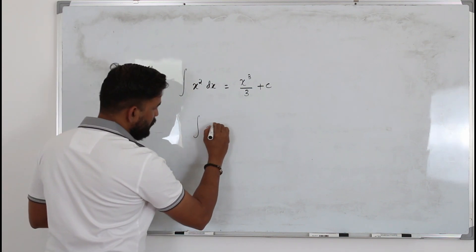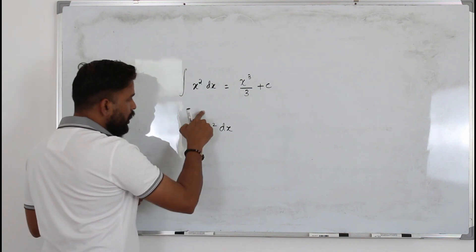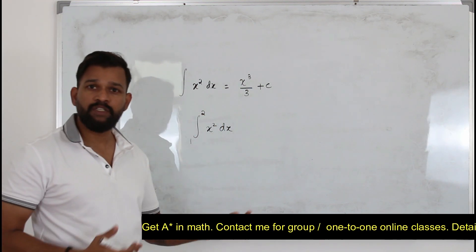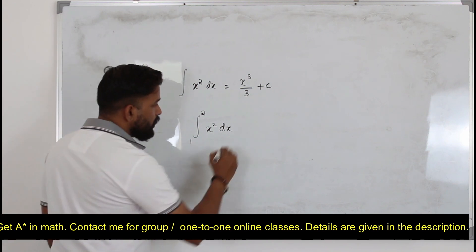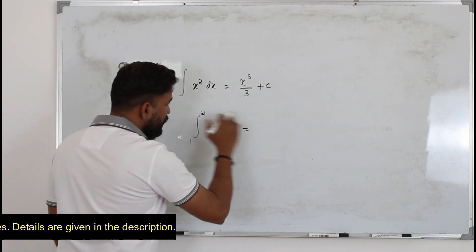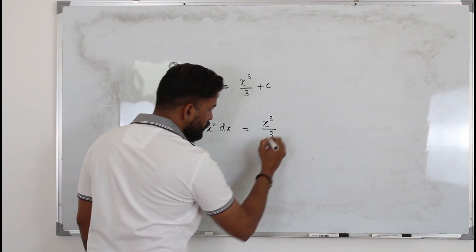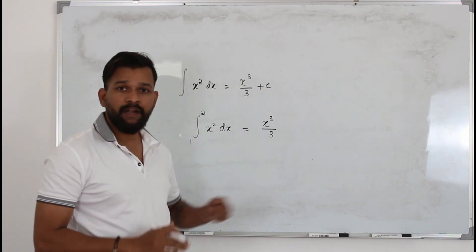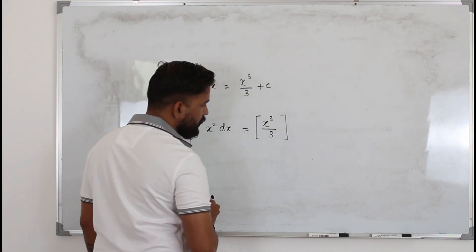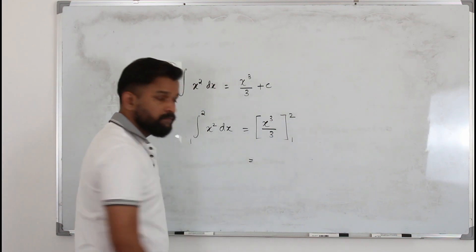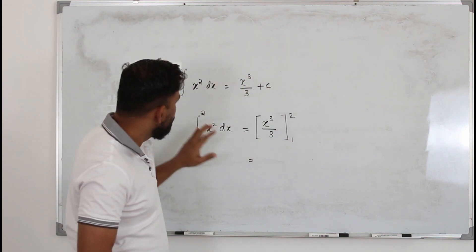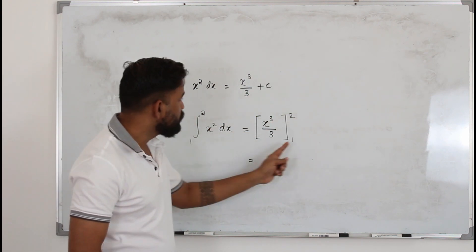A definite integral is the same integration, but you will be given two numbers here called limits — lower limit and upper limit. It can be any number: positive, negative, decimals. The integration part is the same as the one we learned in P1. The integral of x squared is x power 2 plus 1 over 2 plus 1. But here you are not supposed to add plus c. Just put a square bracket and write the limits 1 and 2 here.